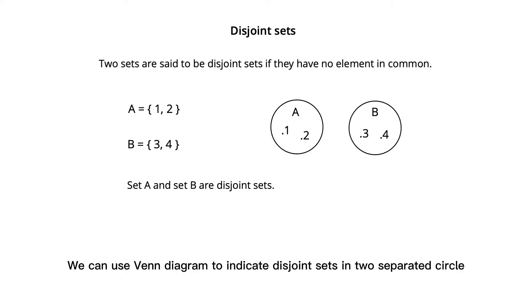We can use Venn diagram to indicate disjoint sets in two separate circles. The Venn diagram of disjoint sets has no overlapping region between two sets.